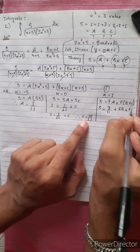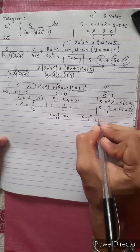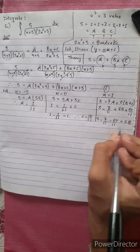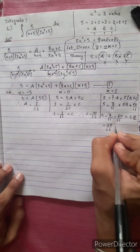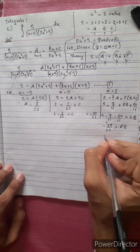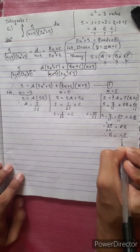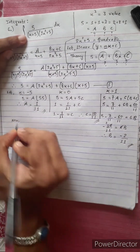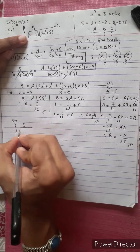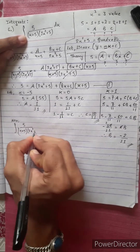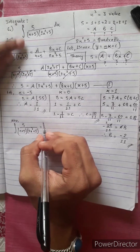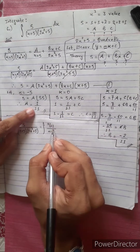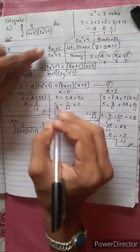Substituting: 5 minus 7 by 11 minus 60 by 11 equals 6B. This gives minus 12 by 11 equals 6B, so B equals minus 2 by 11. Therefore A equals 1 by 11, C equals 10 by 11, and B equals minus 2 by 11.